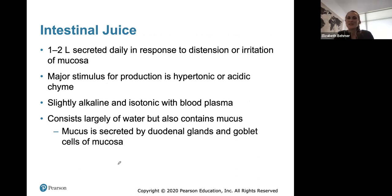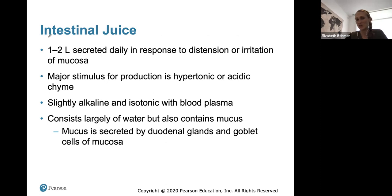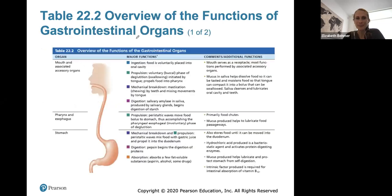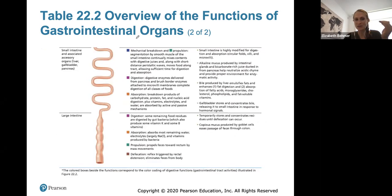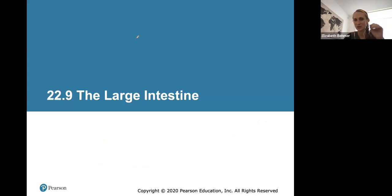About one to two liters of intestinal juice is secreted daily in response to distension or irritation. The major stimulus for production of this juice is hypertonic or acidic chyme — it's essentially an alkaline juice trying to counteract the acidity of anything coming in from the stomach. Two tables in the slides are really good for describing an overview of the functions of the organs in the GI tract from the mouth down to the large intestine, so use those slides to review.